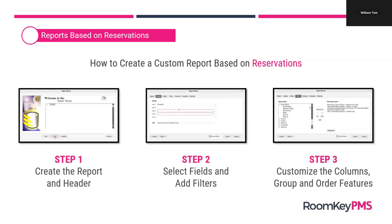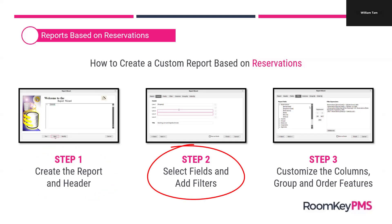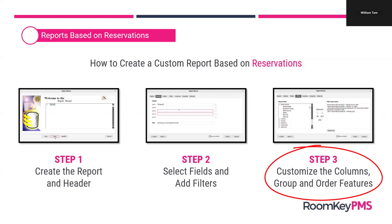To create a custom report, we're going to follow three main steps. Step one is to create the report and header. Step two is to select the fields and add filters using those selected fields. Step three is to customize the columns, grouping, or order features — that's more of an aesthetic step to make sure the report is easy to read and accessible for your team.